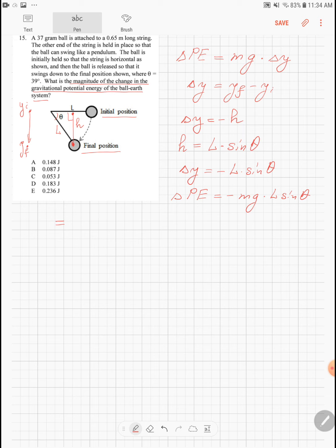The numbers are: the mass is 37 grams, so it is minus 37 times 10 to the negative 3 kilograms. The gravity constant is 9.8 meters per second squared. The length of the string is 0.65 meters and it is all multiplied by the sine of 39 degrees.